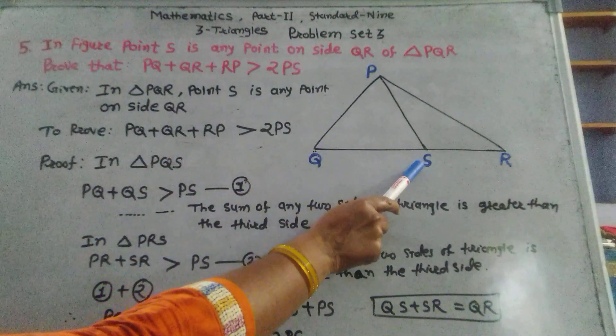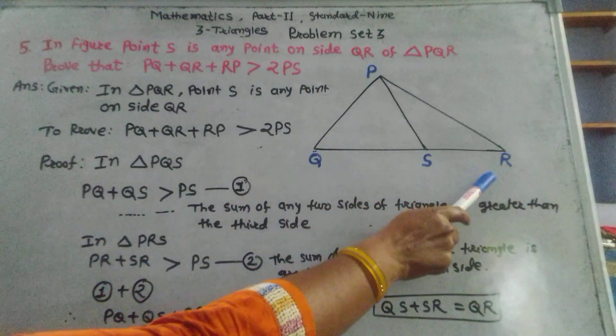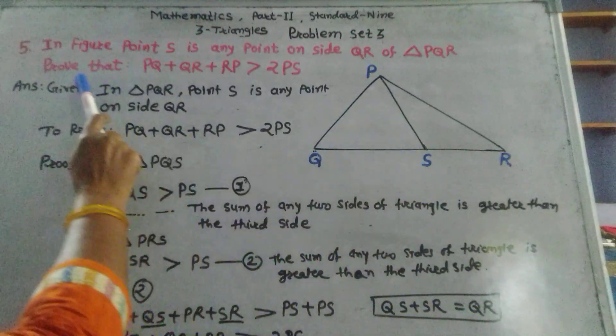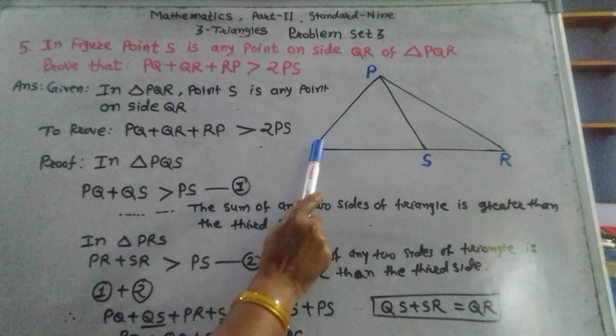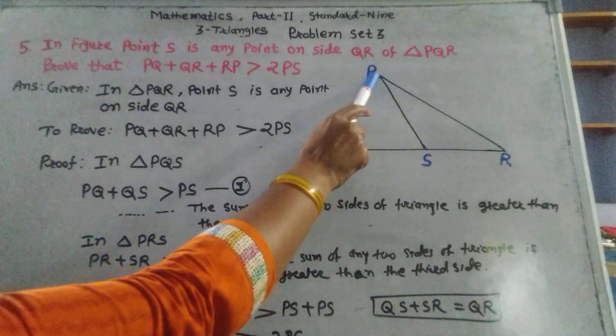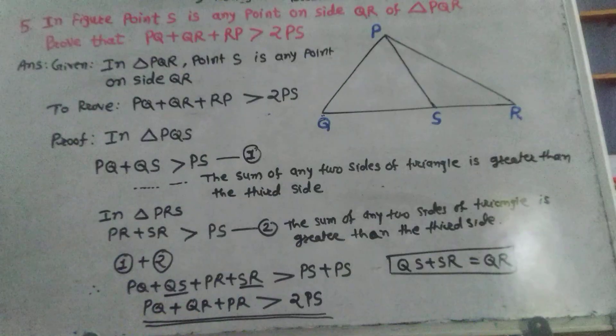Question 5. In a figure, point S is any point on side QR of triangle PQR. Prove that PQ plus QR plus RP is greater than 2 times PS.